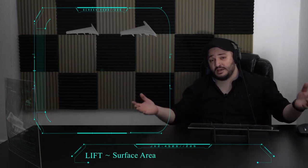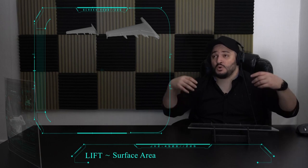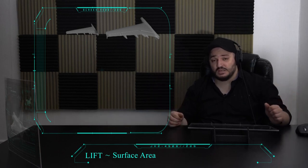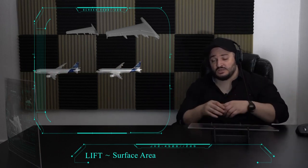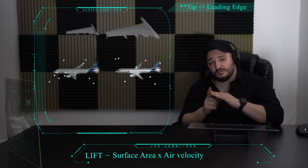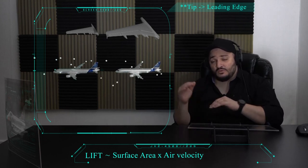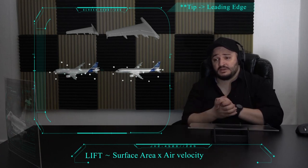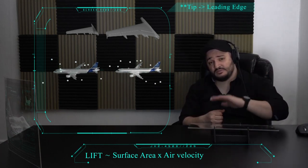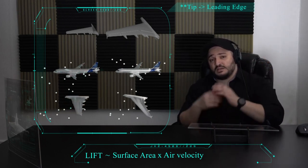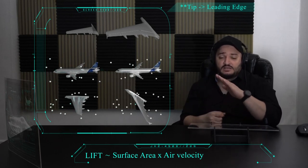Now let's see how we can control the amount of lift. First, bigger wings mean a larger surface area, so more air flows over the wings, more low pressure area is created on top, and more lift is generated. Second, flying faster increases the pressure at the leading edge and increases the flow velocity over the top surface, causing the pressure there to drop even more, generating more lift.